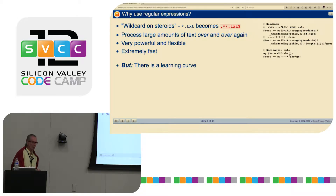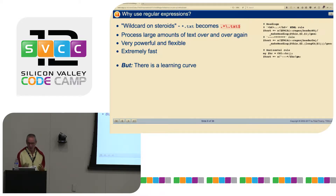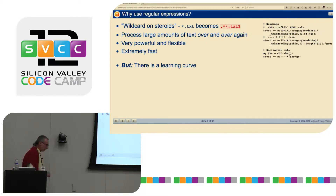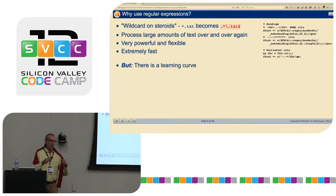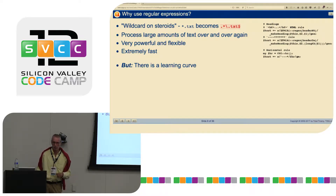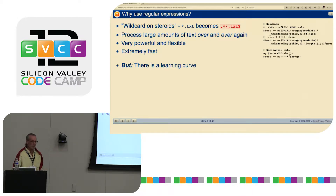So why do we want to use regular expressions? In a way, you can look at this as like a wildcard on steroids. So instead of having *.txt, a regular expression would be .*\.txt$ . You can process large amounts of text very, very quickly — the performance is actually quite amazing. TWiki has its own markup language, TML, and we use maybe 200 regular expressions to turn that markup into HTML before it's delivered to the browser.